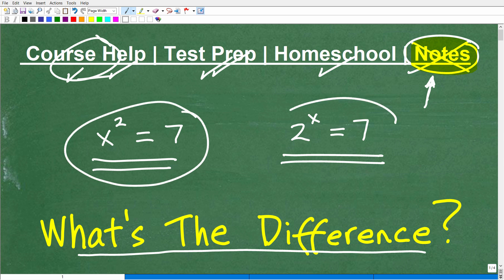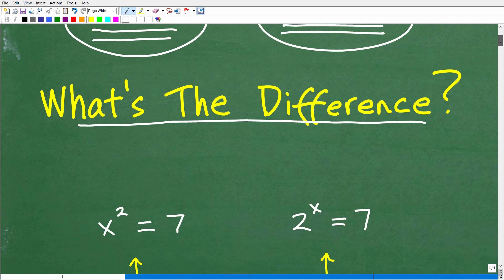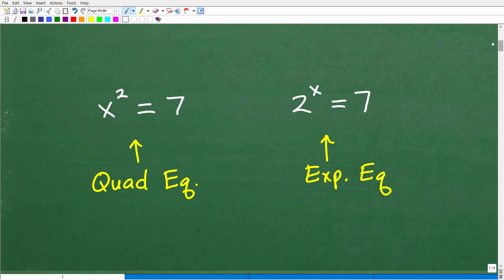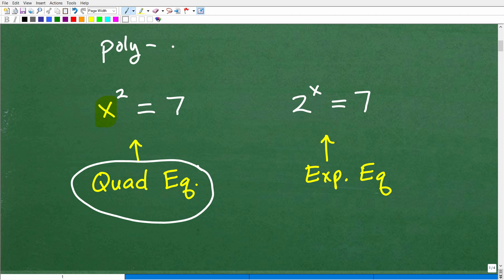But let's get into these two equations. Again, if you know what type of equation this is and what type of equation this is, go ahead and put that in the comments section because I'm going to tell you the answer right now. Okay, so let's go down here and just define what type of equations we're dealing with. So this first one, x squared, okay, is equal to 7. This is a quadratic equation.